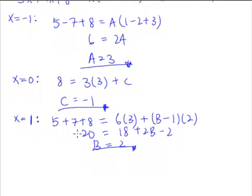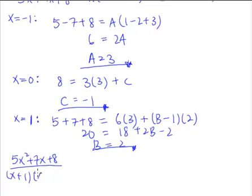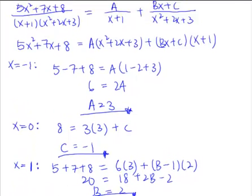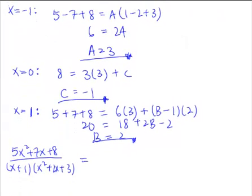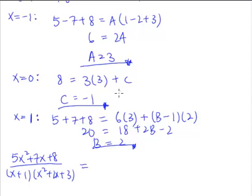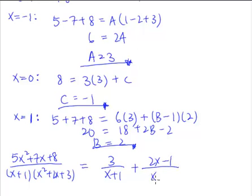Now that we have found A, B, and C, we can write the final answer. We substitute our values — A = 3, B = 2, C = −1 — back into the partial fraction form. The fraction can therefore be written as: 3/(x + 1) + (2x − 1)/(x² + 2x + 3). This is the partial fraction decomposition for the original fraction.